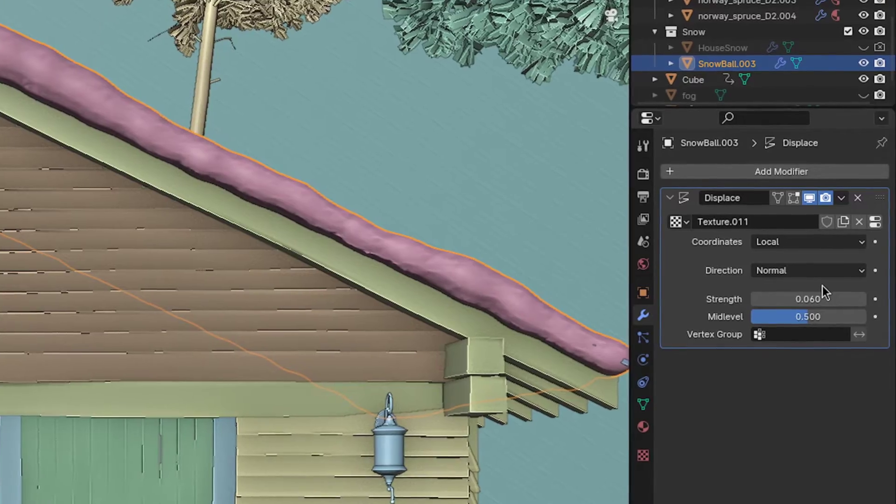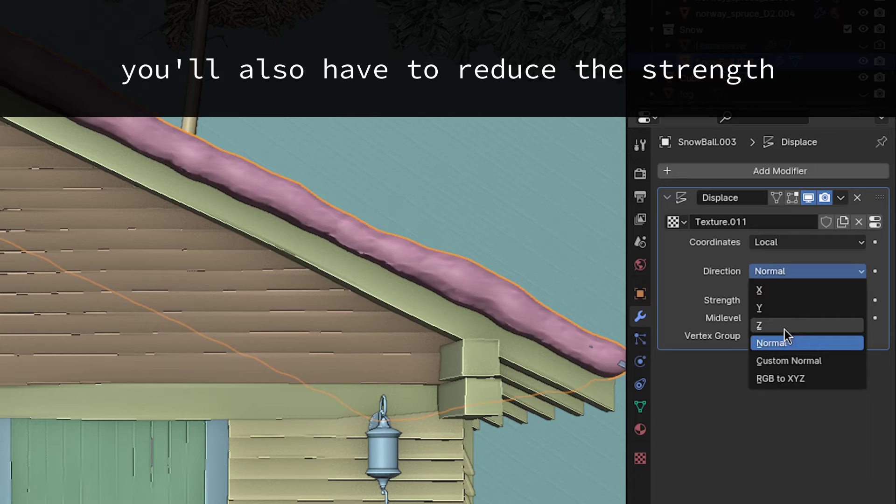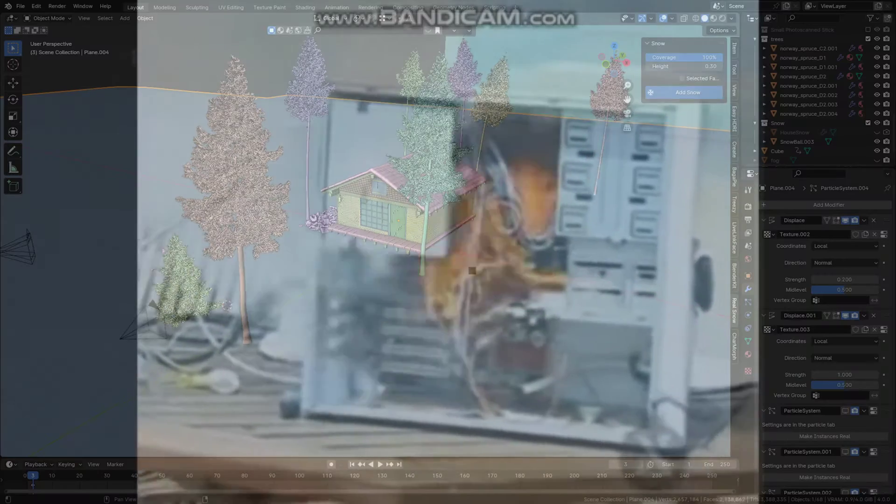Another way you can add randomness is a displacement modifier with a cloud texture and the direction set to Z. For this scene, that's how I added variation to the ground snow. And speaking of, if you've tried to add snow to the whole ground using the real snow add-on, Blender will most likely have locked up or crashed.